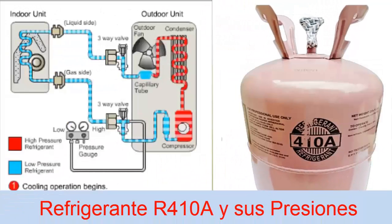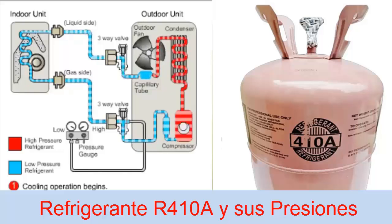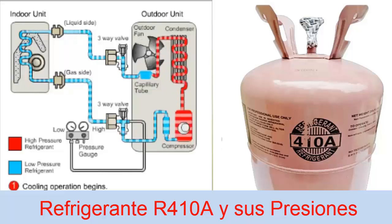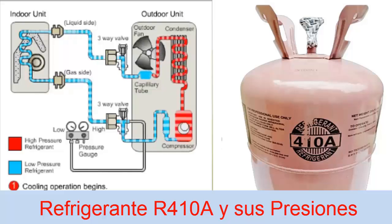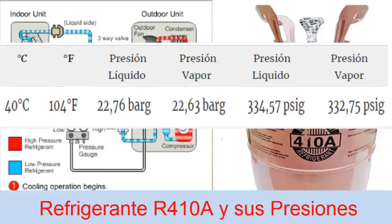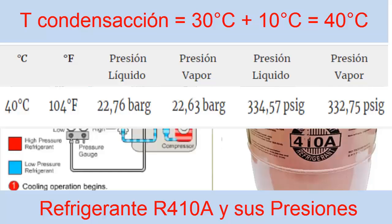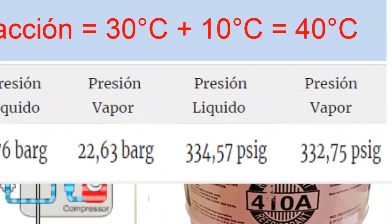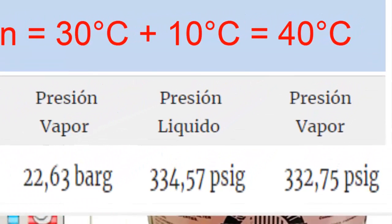On the high side, with an average ambient temperature of 30 degrees Celsius, the pressure that will mark the high pressure gauge is 22.63 bar, which is equivalent to about 332.75 psi — that is the upper part.